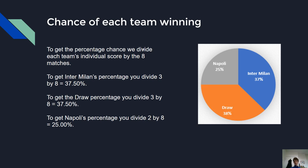We need to turn that into a percentage chance for each outcome. To get the percentage chance, we divide each team's individual score by the eight matches total. For Inter Milan, three divided by eight gives us 37.5%. The same calculation for the draw also gives 37.5%, and for Napoli we get 25%.